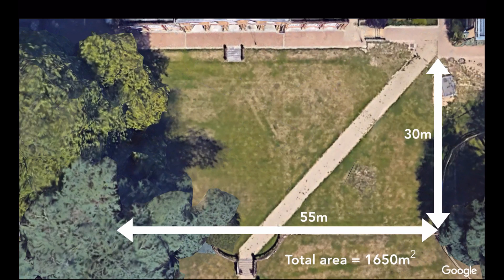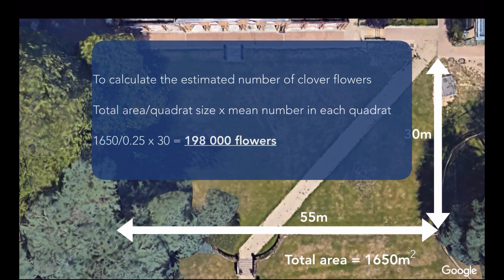The next step is to work out how many quadrats would actually fit in my field. To do that, we take the total area of the field, which is 1,650, and divide it by the size of the quadrat, which is 0.25 meters squared. Once we've got that value, we multiply it by 30, because that was the mean value. That gives us a figure of 198,000 flowers — thank goodness we didn't have to count them all.